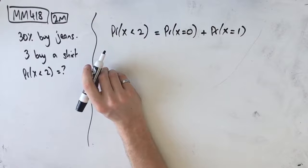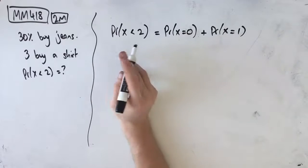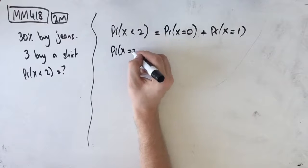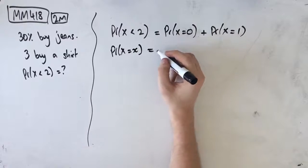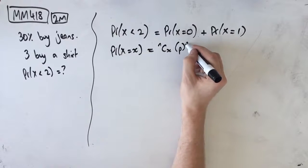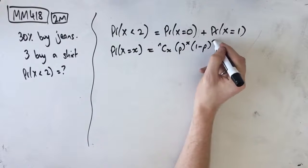This kind of sucks without a calculator, so apologies, but you do have to know how to do this. Our binomial distribution formula tells us that the probability that X equals x is equal to nCx times p to the x times (1-p) to the (n-x).